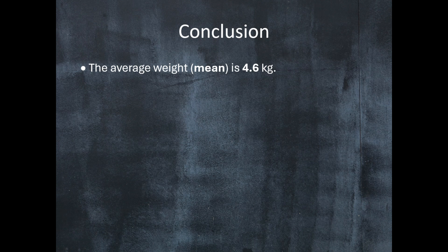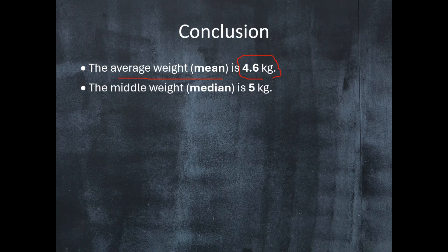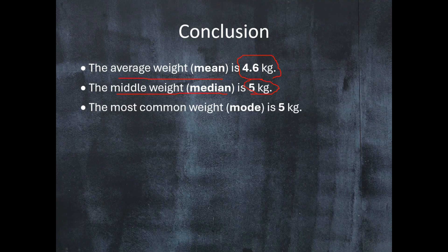We can say that the average weight or mean of the puppies is 4.6 kilograms. We can also say that the middle weight or median is 5 kilograms, and the most common weight or mode is also 5 kilograms.